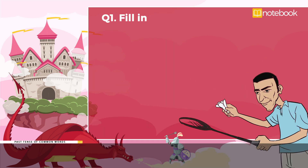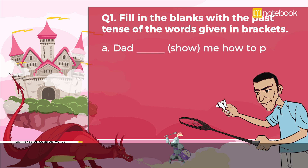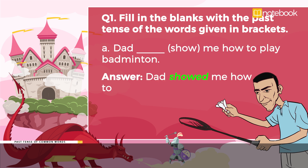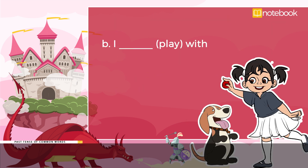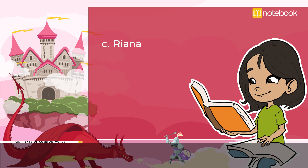Let us try to solve some questions. Fill in the blanks with the past tense of the words given in brackets. A: Dad ___ (show) me how to play badminton. Answer: Dad showed me how to play badminton. B: I ___ (play) with my neighbor's dog. Answer: I played with my neighbor's dog.